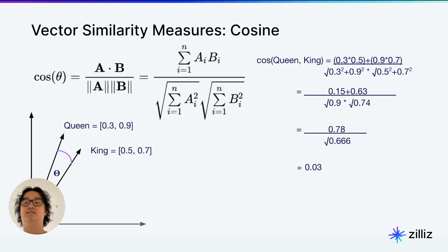And when we take this and add it up, we get 0.78 divided by square root of 0.9 times square root of 0.74, or 0.78 divided by square root of 0.666, which is about 0.3.